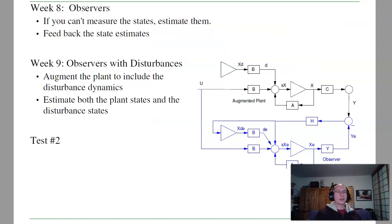Week 8, we'll look at observers. Now, the problem with full state feedback is you have to know the states. Sometimes the states aren't measured or difficult to measure. In that case, we'll build a state estimator or an observer. It basically is a model of the plant, with the feedback gain to force the observer states to converge to the plant states. Once I know that, I can then feedback the state estimates. If I have disturbances on the plant, that's going to mess up my state estimates, so I augment the system with more states. That's the observers with disturbances. That'll be followed by test number 2.